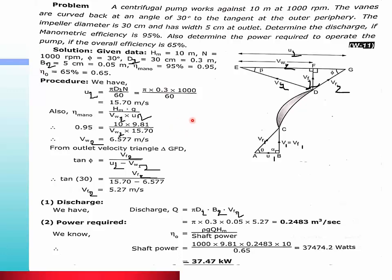To determine VF₂, first let's find U₂. U₂ formula is πD₂N divided by 60, which gives U₂ = 15.70 meters per second. Manometric efficiency formula is 2gH divided by VW₂U₂, so from this we determine VW₂ = 6.57 meters per second.